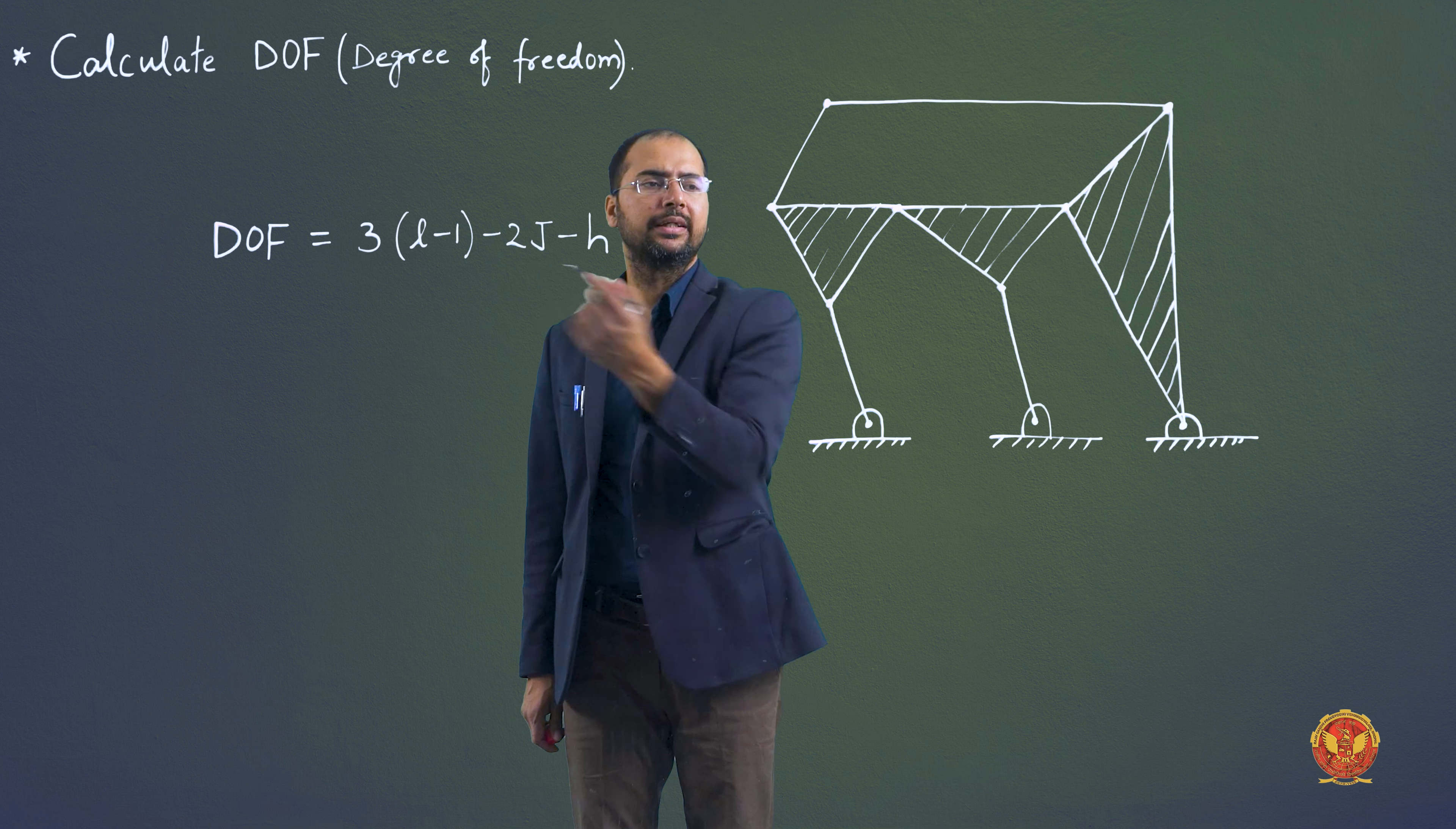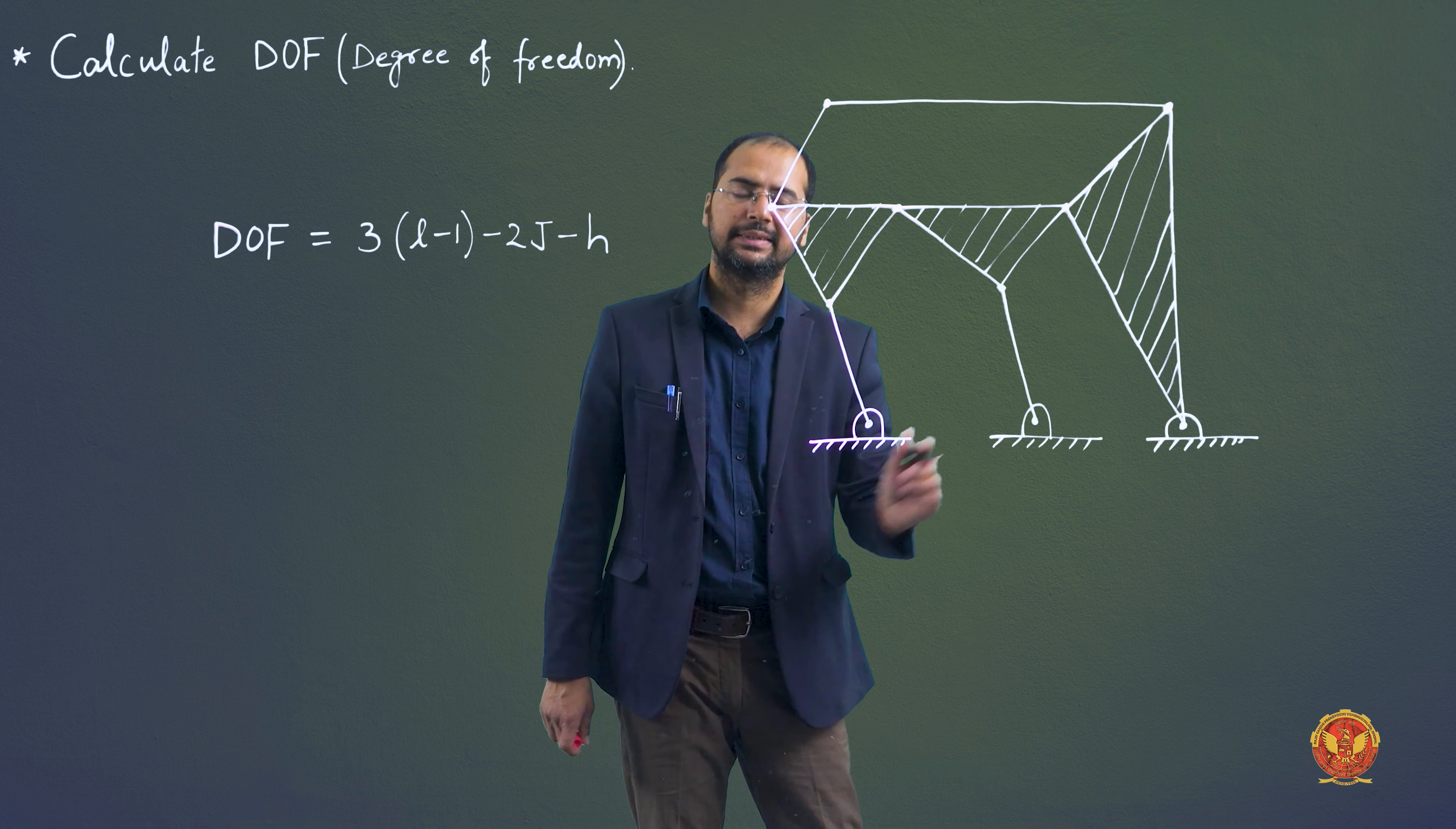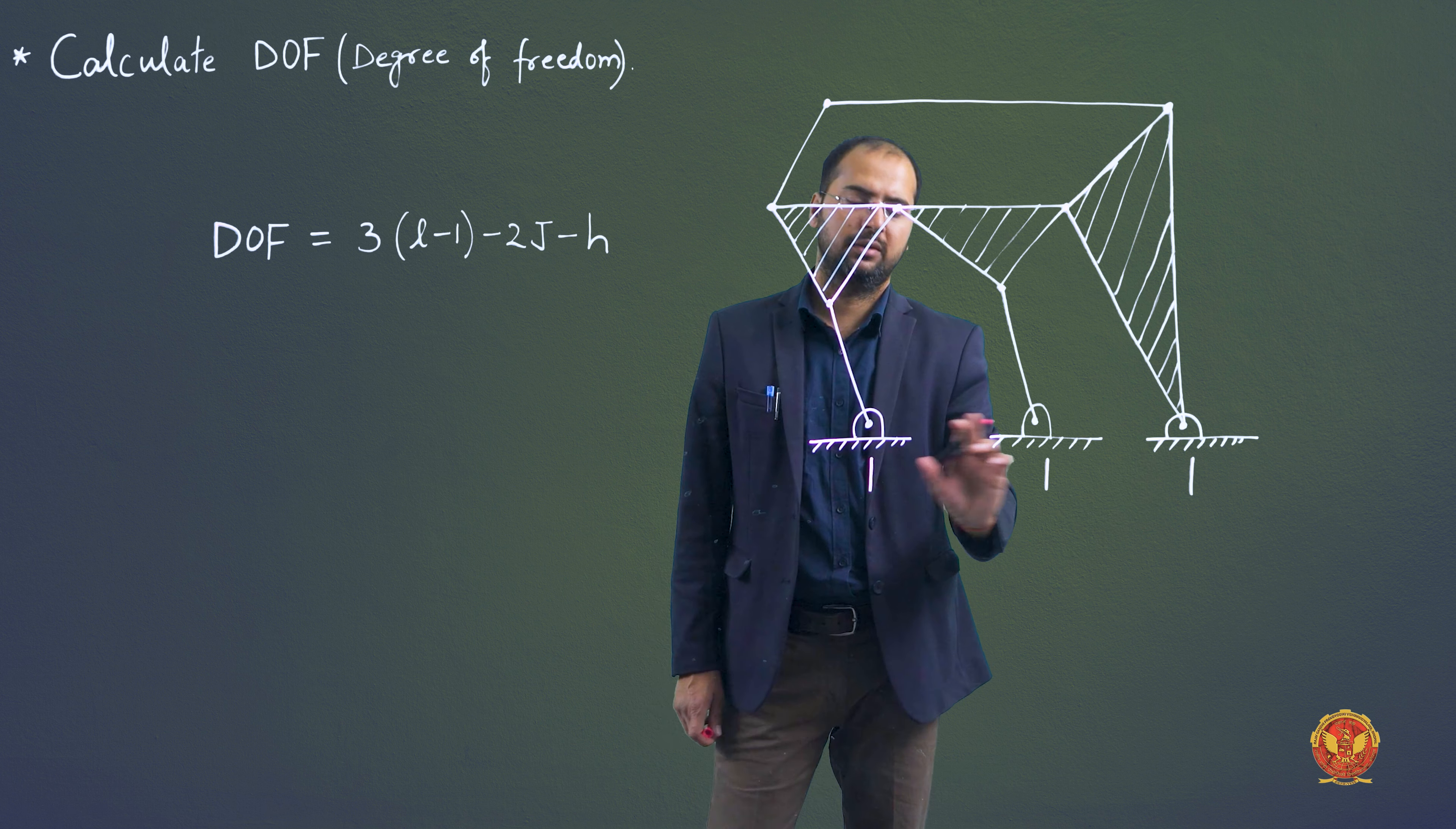So first we calculate how many links are, how many binary joints are, and how many higher pairs are. First we start numbering with fixed links. So let's look at the fixed link, numbered as number 1. In all fixed links, we will denote number 1.